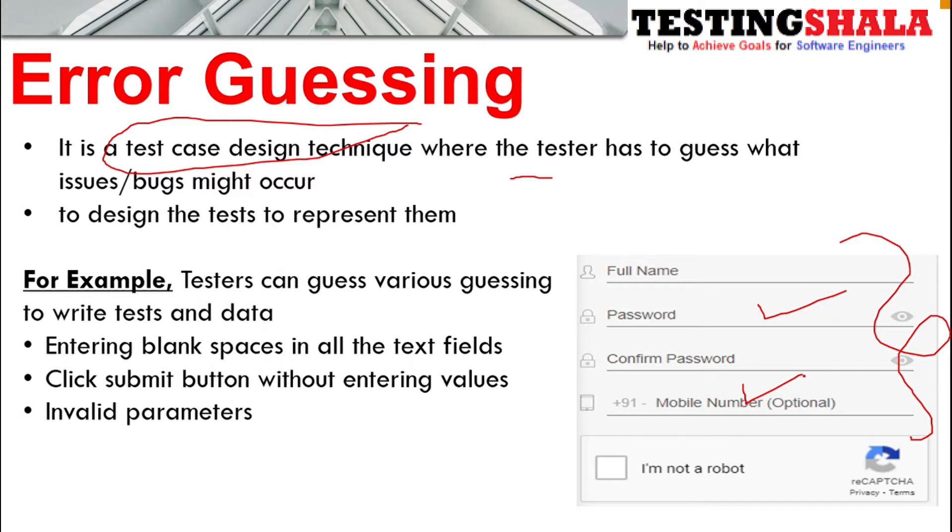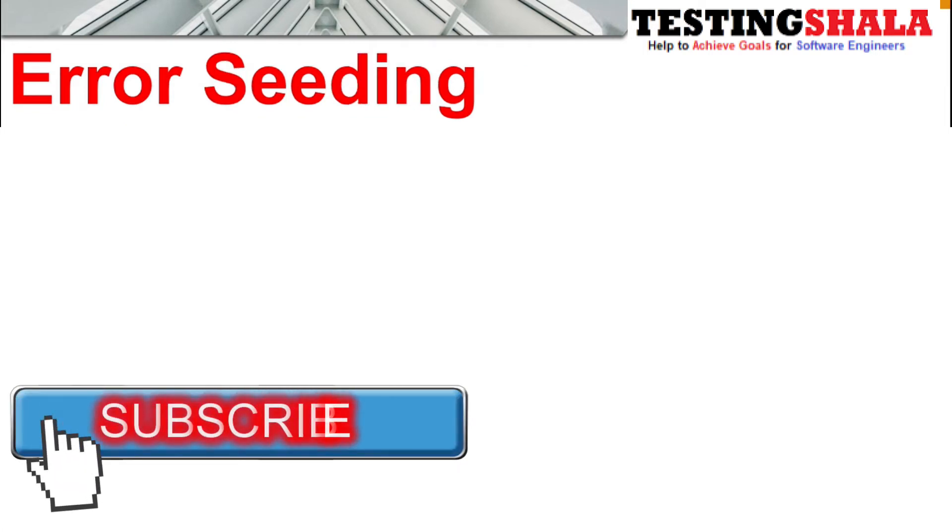We may get various issues or bugs in the application. In order to do that, we will be making use of error guessing where the tester will guess the errors by putting various values into the application.